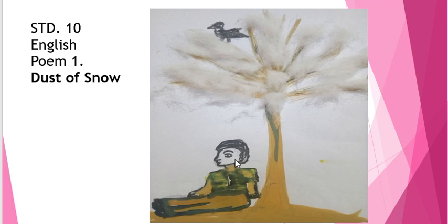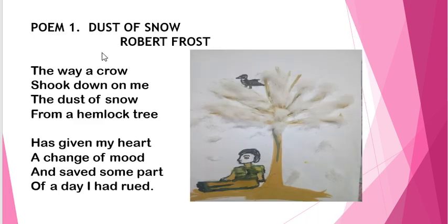Now let us begin with the explanation. I hope you have understood the major symbols which are used in the poem. The poem is a very short one. It consists of only two stanzas and eight lines. The poem is written by one of the great poets, Robert Frost. Now let us begin with the explanation of the poem.